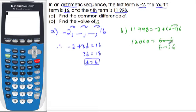n minus 1 times 6, divide both sides by 6, n minus 1 equals, 6 goes into 12, 2 times, so into 12,000, 2,000 times. Add 1 to both sides,